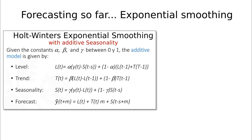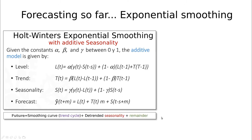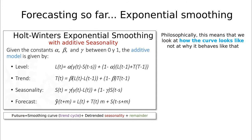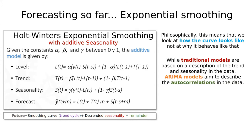Finally we covered exponential smoothing. Here you have a summary of Holt-Winters exponential smoothing with seasonality. The idea is to predict the level of the last point by doing a weighted average of the last observation with weight alpha plus one minus alpha times something. That something includes the trend, which is the slope, the seasonality, and our future is going to be something like the smoothed last observation, the smoothed trend, and the smoothed seasonality. Philosophically this means we look at how the curve looks like, how y behaves. Traditional models try to describe the trend and seasonality of the data.